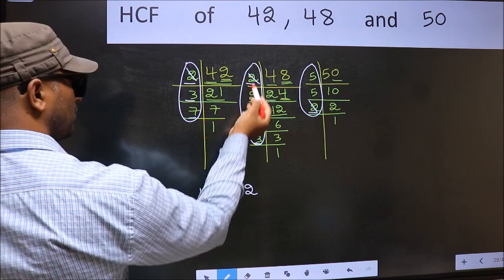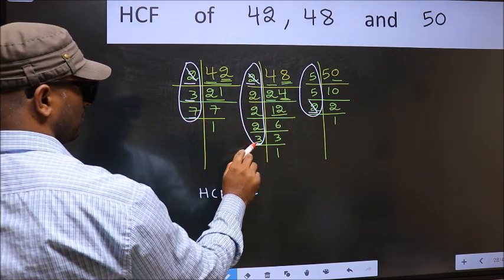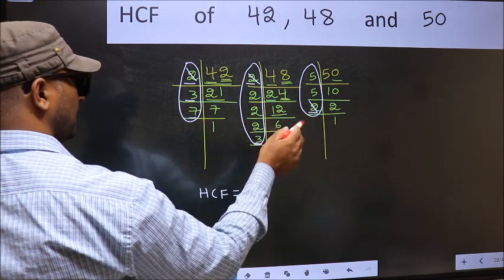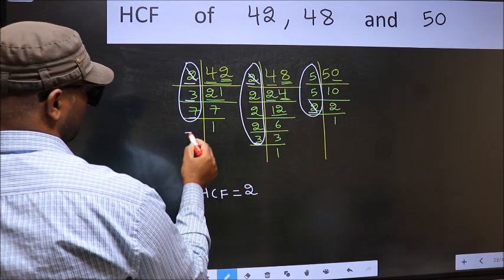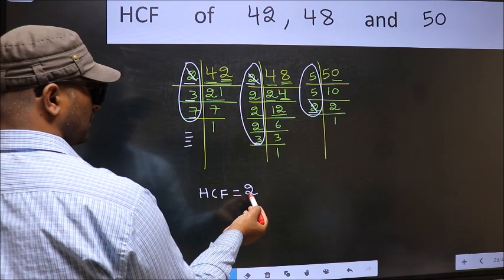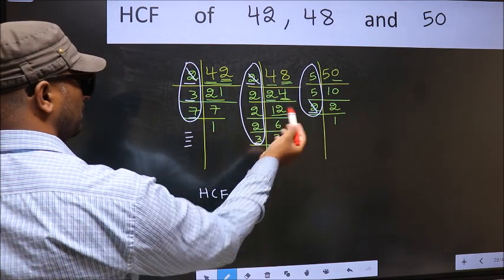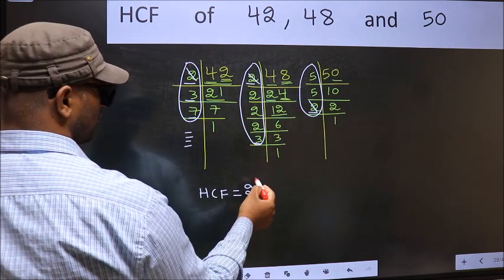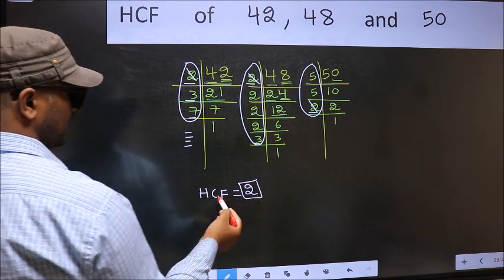Next number 7. Do we have 7 here? No. So no need for us to check in the other place. No more numbers have been left out. So we got only one number 2 present in all the 3 places. So 2 itself is our HCF.